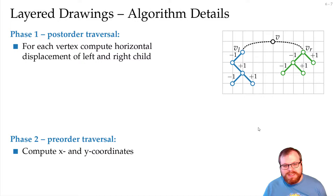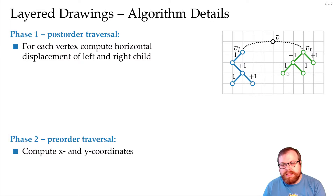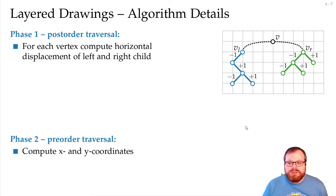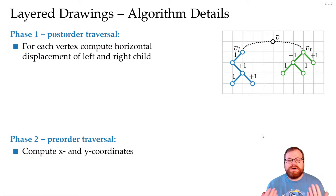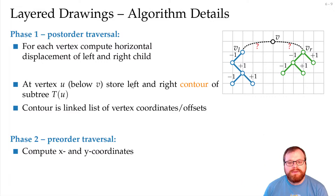But of course, it's not that easy, because what are the displacements here? We could put this as minus three and plus three, but then they are too far away. We want them to be closer, and to figure out exactly how close, we have to find more information. So what we also want to do is store the left and the right contour of every subtree.